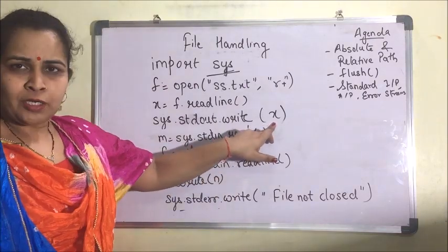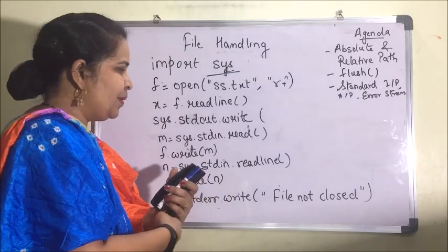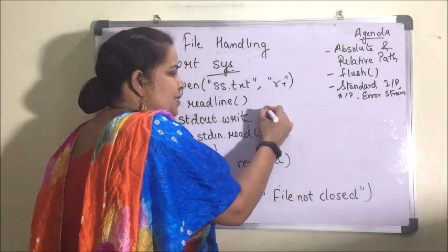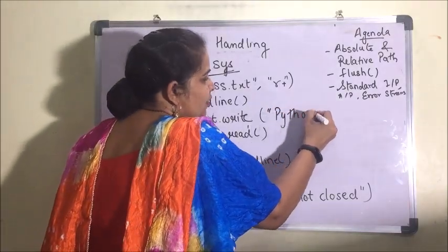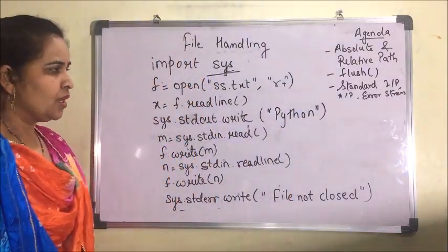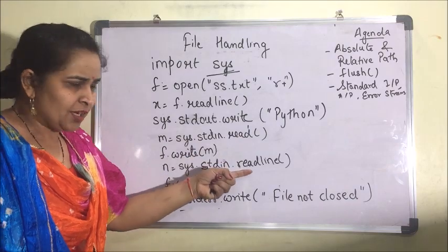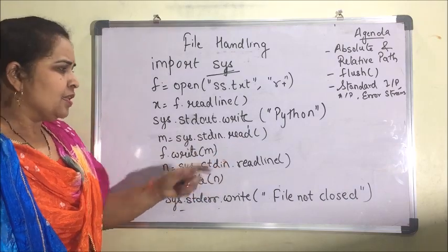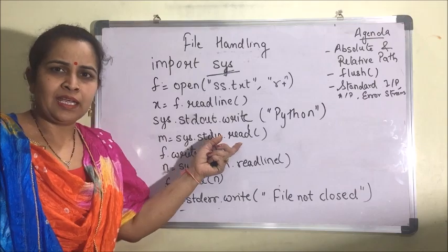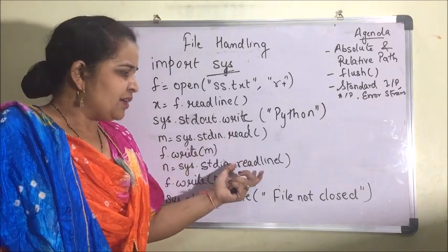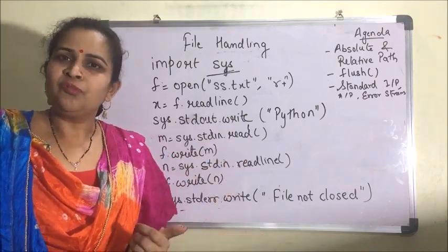If you want to write any error message or custom text rather than a variable, you can simply write it in quotes — whatever you want to display. Then there are read and readline functions. Initially, read and readline were used to read from a file, but we can also use them with standard input to read from the keyboard.